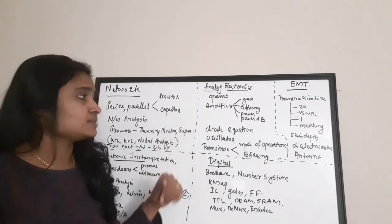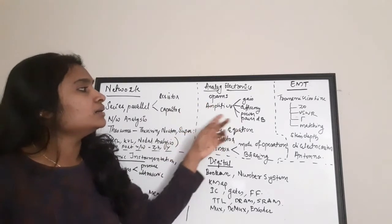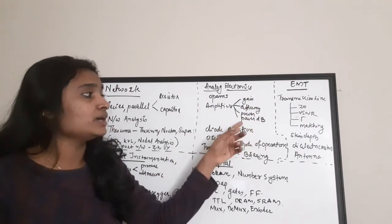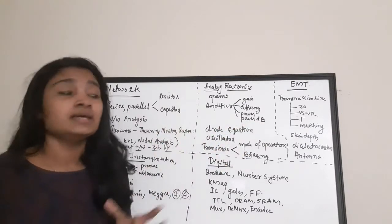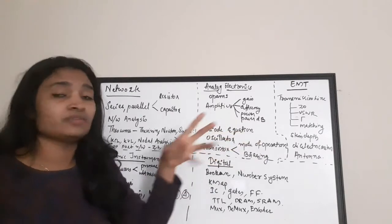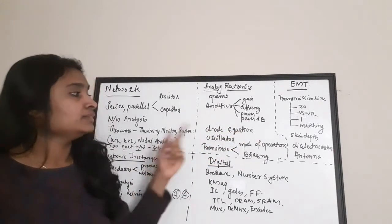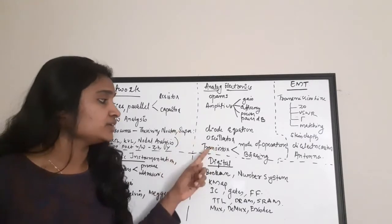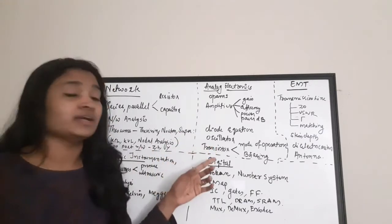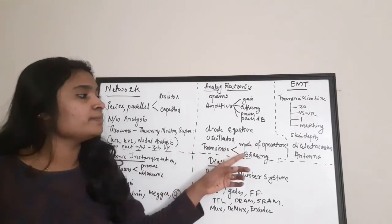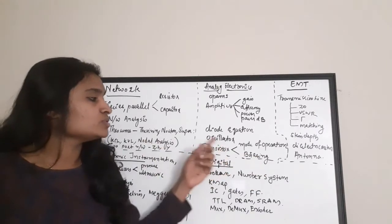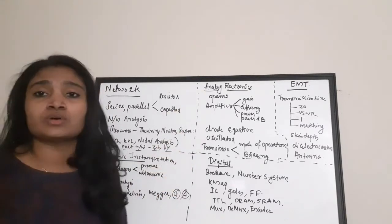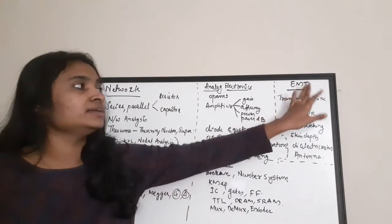Next comes Analog Electronics. You have to mainly concentrate on op-amps, and amplifiers — focusing on gain, efficiency, and power. There are also questions on power conversion to dB, where you convert given ratios into dB or vice versa. Other important topics include the diode equation, oscillators, and transistors — specifically the mode of operation, biasing, and current gains for various configurations: Common Emitter, Common Base, and Common Collector.